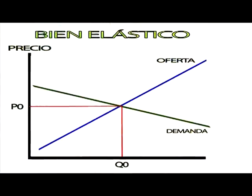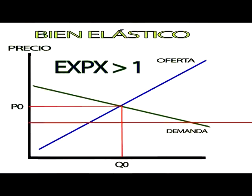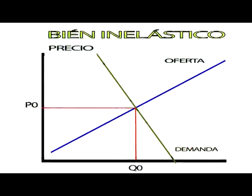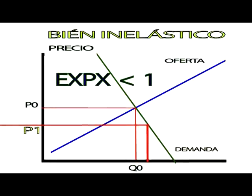Si la elasticidad precio es mayor que 1, diremos que es un bien elástico. Es decir, ante pequeños cambios en los precios, su cantidad demandada varía bastante. Si la elasticidad precio es menor que 1, diremos que es un bien inelástico. Es decir, ante pequeños cambios en los precios, su cantidad demandada variará aún en menor medida.